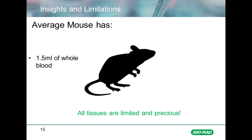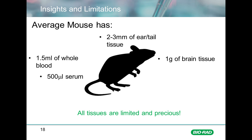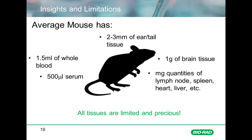Looking at what is actually available from a mouse model: an adult mouse has approximately 1.5 milliliters of whole blood, from which one can derive approximately 500 microliters of serum for use in assays. For genotyping, there's approximately two to three millimeters of an ear punch or the tip of a tail. The brain of a mouse is approximately one gram, so individual brain region dissections can be difficult. In general, the rest of the tissues — lymph nodes, spleen, heart, liver — are milligram quantities, meaning sample availability can be a real limitation when assessing liver toxicity or other markers.